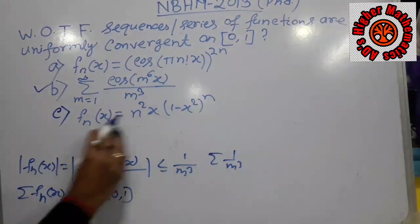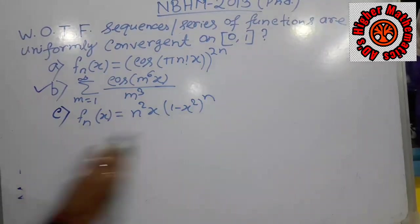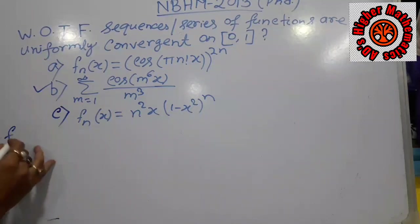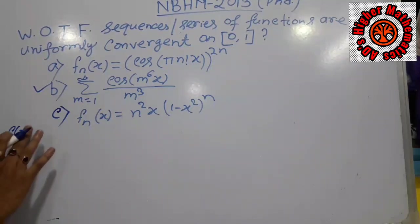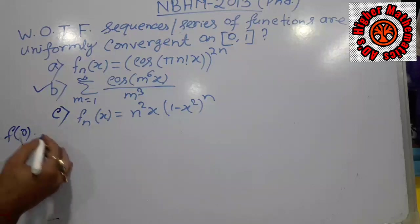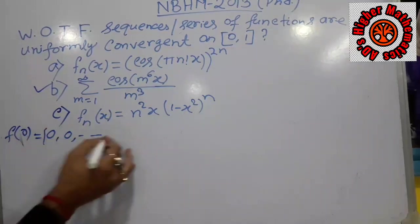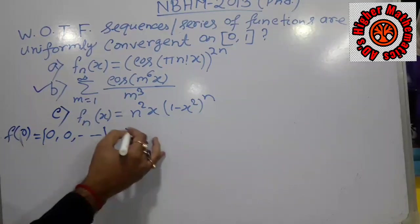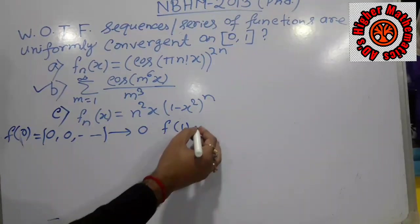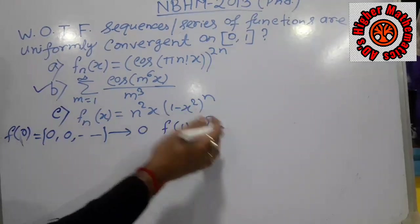Now we come to the third option C, which states that F_n(x) = n² x (1 − x²)^n. If we put x = 0, then the sequence gives 0. Similarly, if we put x = 1, then (1 − 1) = 0, so all boundary points give 0.